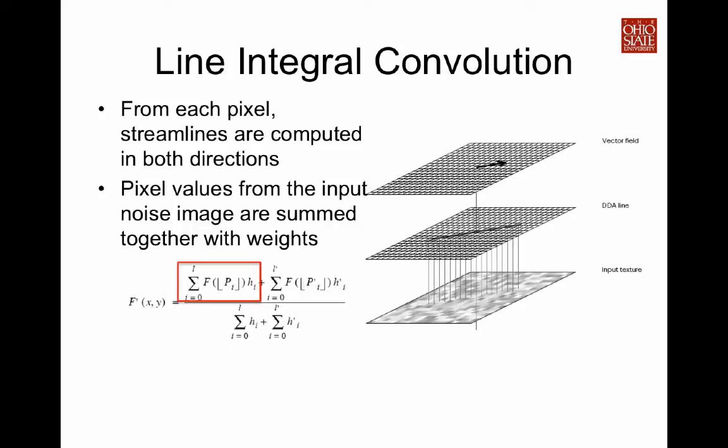And this is the equation we use to multiply. So the first red box, the f function represents the input noise pixel values and pi are the pixels along the forward streamline. For every pixel value in the noise image, we take a ceiling because we truncate the floating point position to integer position to get an actual pixel value. We multiply by the weight, hi. This h is the so-called convolution kernel, which is just the weight assigned to each pixel.